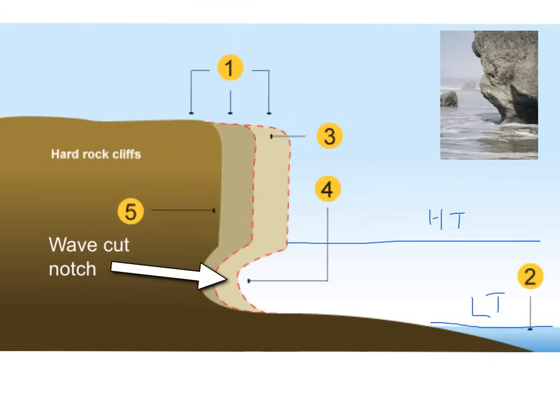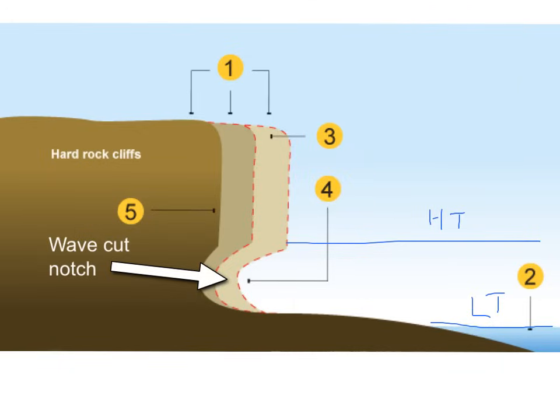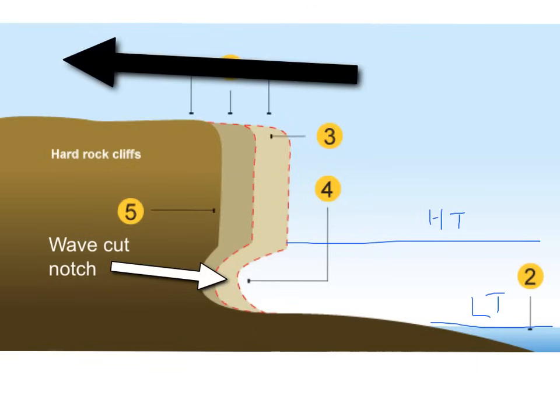This wavecut notch becomes bigger and bigger until the overhang becomes too great, and due to the force of gravity, the cliff above will collapse, causing the fallen rock to be washed out to sea. This ongoing process will make the whole cliff retreat, and over time it will move further and further inland, leaving behind a wavecut platform.